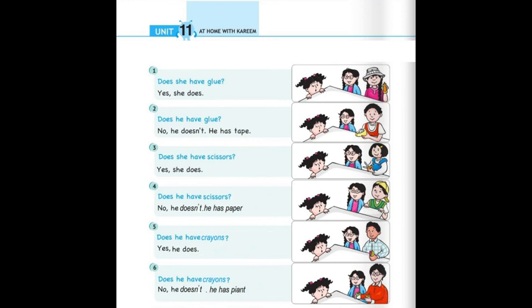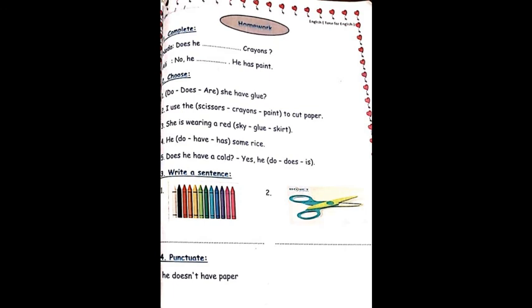Number five: Does he have crayons? When I say no, no he doesn't. Very good, he has paint. Okay, now you will answer page 49 in your booklet as homework.